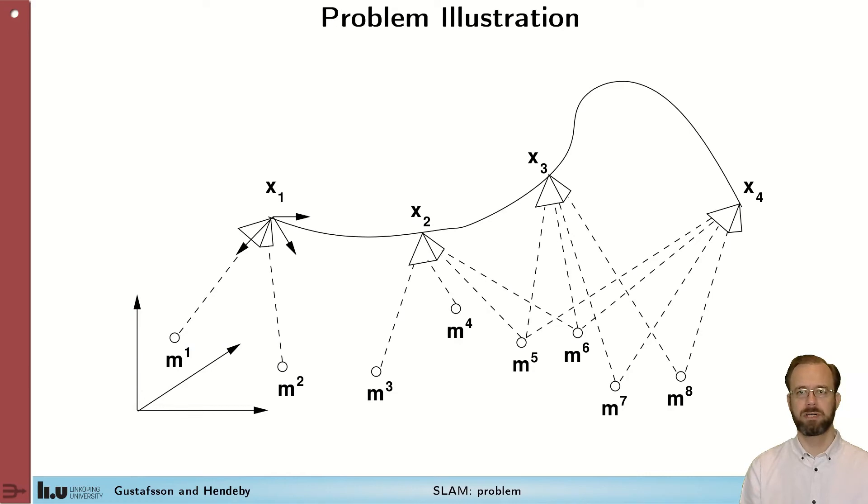So let's visualize the SLAM problem. So we have a sensor indicated by this cone here, moving around in some 3D space with some global coordinate system here, observing landmarks, M's in this case. And our problem is to try to determine how this motion is, and where the landmarks are so that we can make a map. And that is a SLAM problem. We need to do this simultaneously.